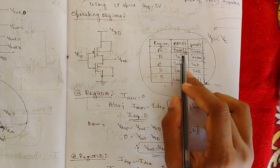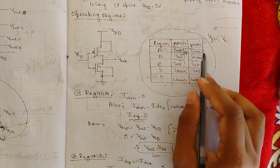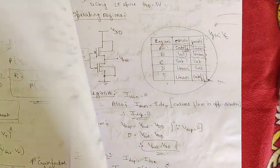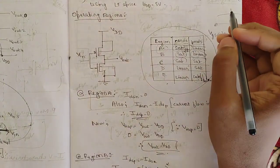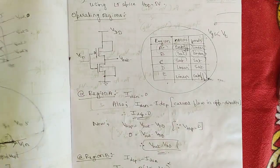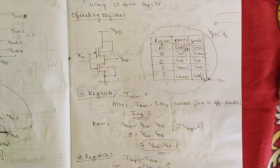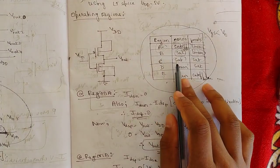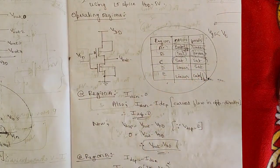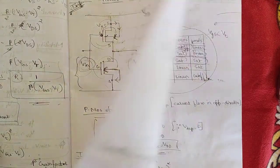In region B, NMOS is in saturation because for NMOS the saturation condition VGS > VT and VDS > VGS − VT is met. In region C, both the NMOS and PMOS transistors are in saturation simultaneously. This completes the differences between the five operating regions and the overall CMOS inverter DC characteristics.